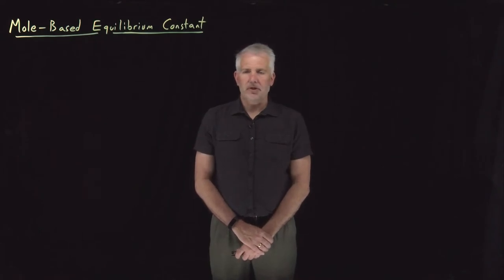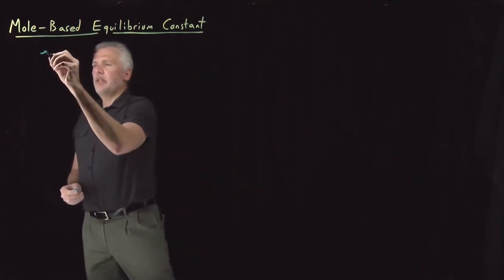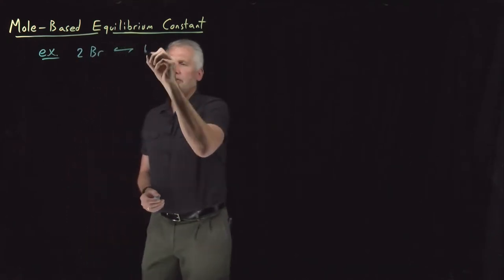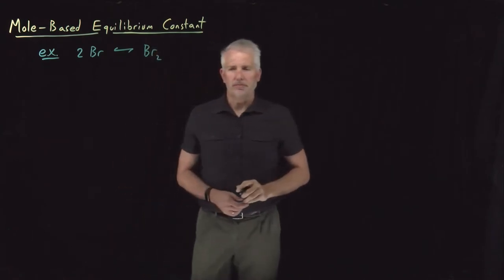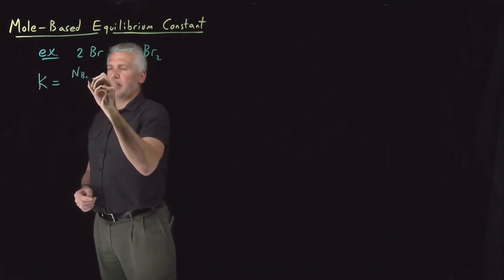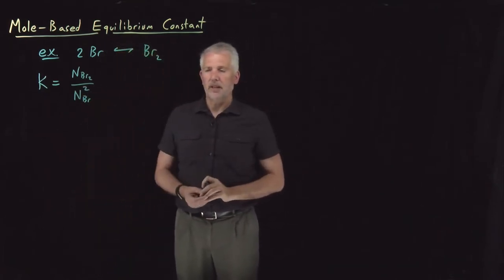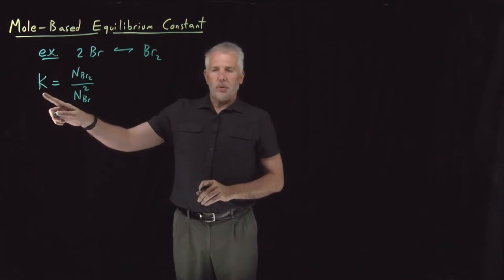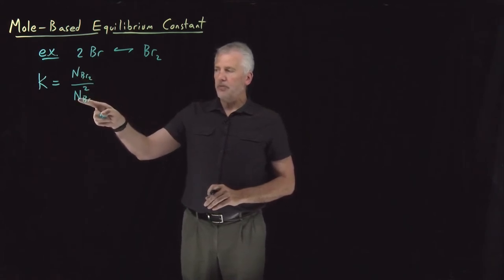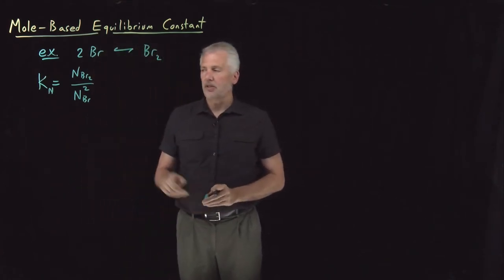Let's see if we can get to the bottom of this issue of how to deal with equilibrium constants in molecules versus moles, using the same example reaction we've used before: two bromine atoms dimerizing to form a bromine molecule. We can write the equilibrium constant as molecules of product over molecules of reactants, all raised to their stoichiometric coefficient. That's the equilibrium constant we've been calling K or K_EQ — I'm going to call that K sub capital N, the equilibrium constant written in terms of molecules.